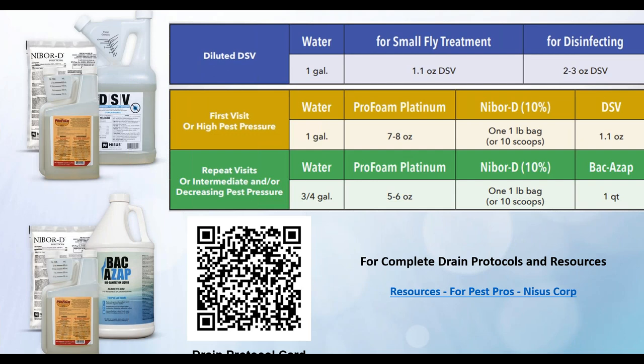At the beginning, you might have DSV laying around from the COVID days. One of our products — DSV, the disinfectant sanitizer virucide — is actually labeled for drains and has small flies on the label. We have a mix card and protocol card available. That QR code will take you directly to the drain protocol card. This link on the right-hand side takes you to the resources page, where you can find our protocols on how to mix Nibor-D with DSV and these different components.